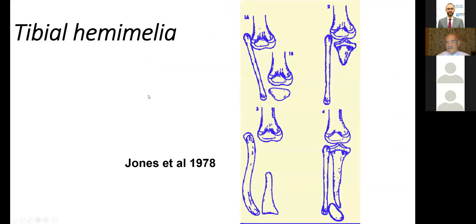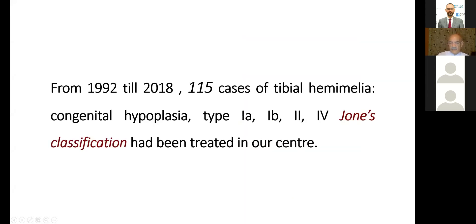Now, a hint about tibial hemelia. We usually use the Jones classification, which is the most simple. Type 1A: complete absence; Type 1B: if you have a cartilaginous anlage. Type 2: you have just proximal tibia. Type 3: you have just distal tibia. Type 4: absent distal tibia with diastasis of the tibiofibular joint. We also include another entity — congenital hypoplasia — where you have a normal tibia but very short.